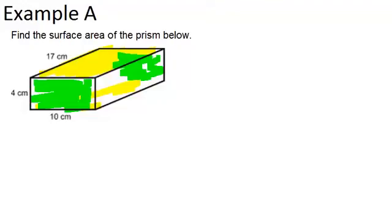Since all the faces are rectangles, and we know that the area of a rectangle is base times height, we can figure out those areas. So let's start with this face right here. Its dimensions are 4 by 10, so the area of that part right here is going to be 40 centimeters squared.